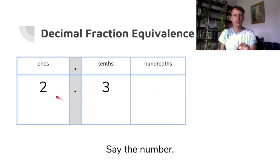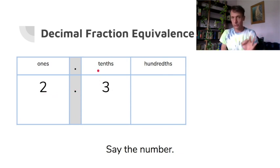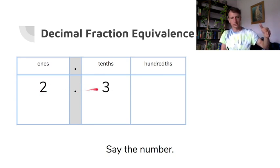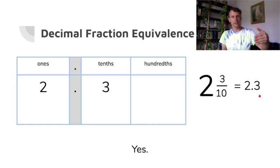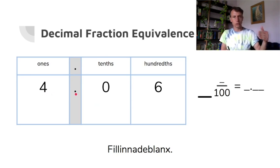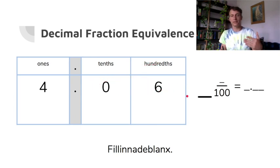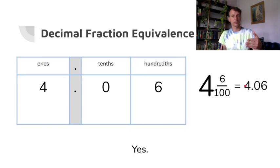Now with digits instead of place value discs — say this number: two and three tenths. As a math number, we write it 2.3. We read it as 'two and three tenths' and write the same as a mixed number. Now four and six hundredths — notice there are no tenths, so we just read what we have: four and six in the hundredths place, written as 4.06.